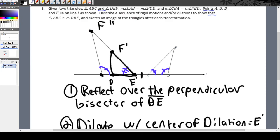So this is going to be F double prime. And this is going to be D double prime. And that gets you your final picture that shows that EFD will fit onto the original triangle ABC.